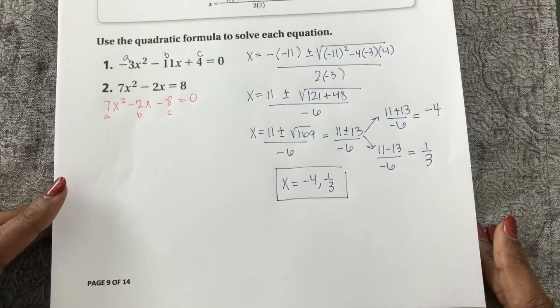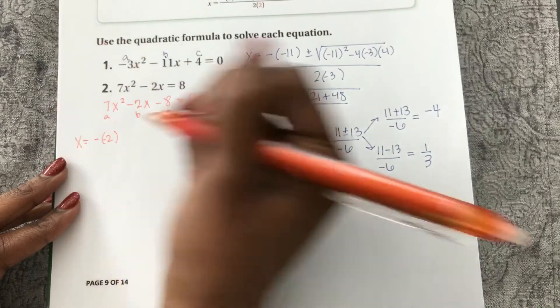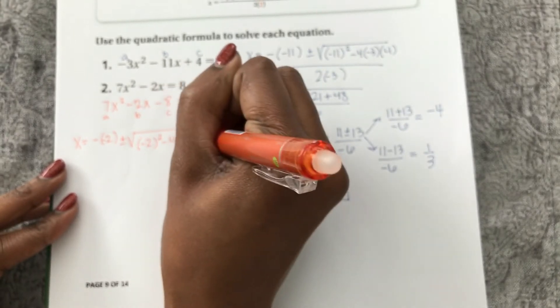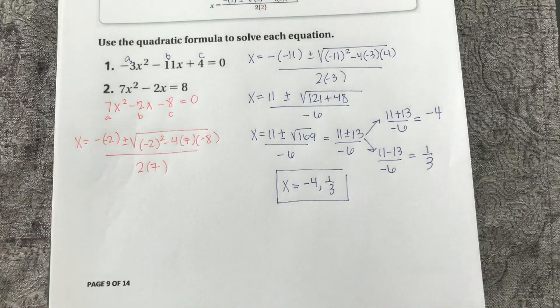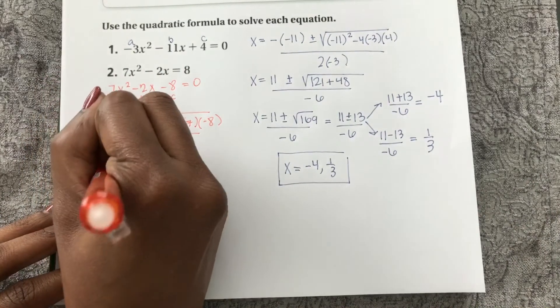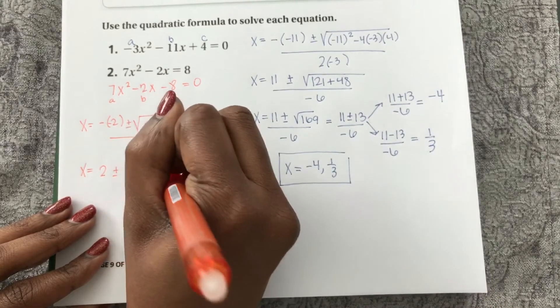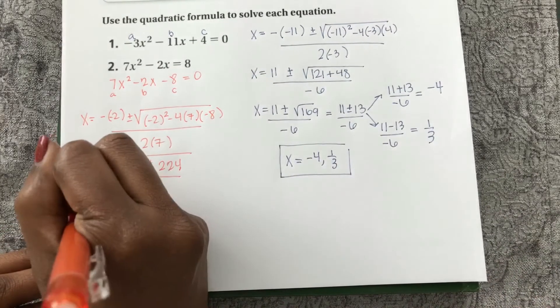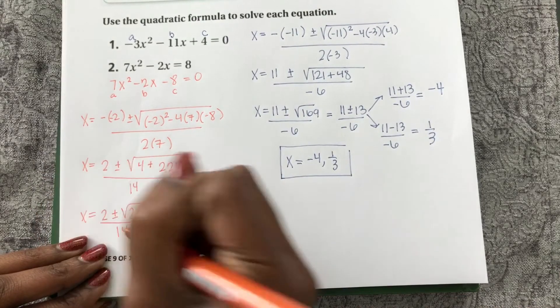It must be equal to zero first before you can use the quadratic formula. x equals negative b plus or minus the square root of b squared minus 4ac all over 2a. Now that I've plugged everything in, I can simplify. x equals 2 plus or minus the square root of 4 plus 224 all over 14. So x equals 2 plus or minus square root of 228 all over 14.